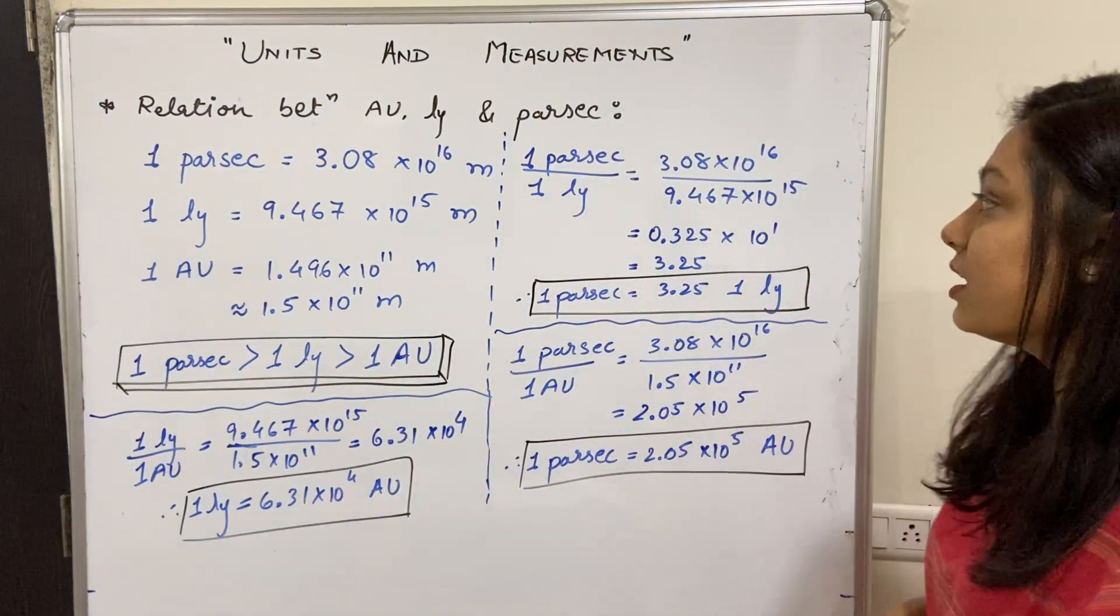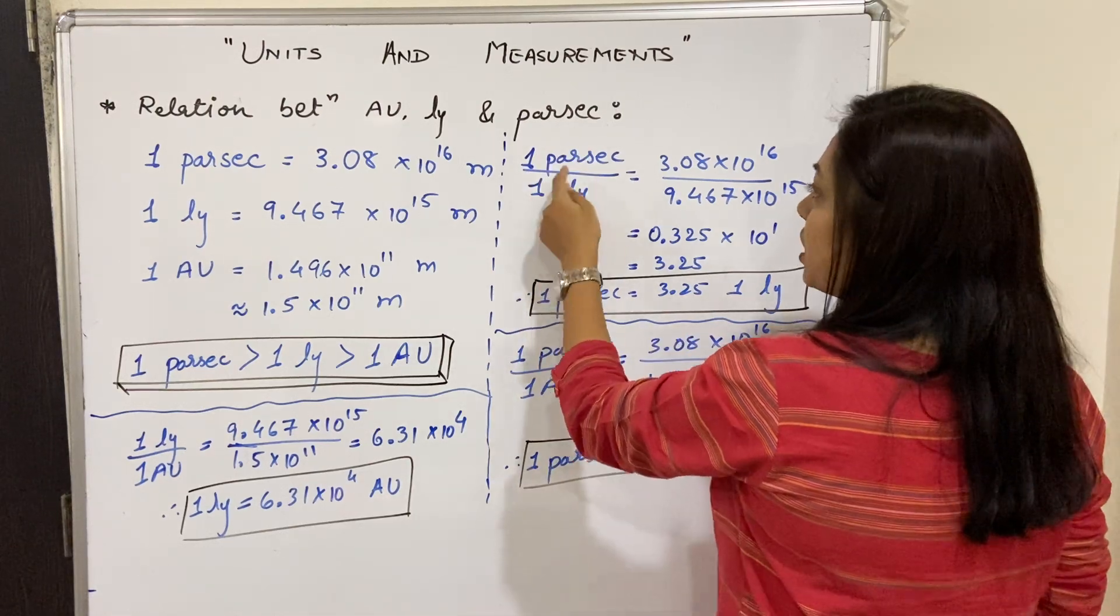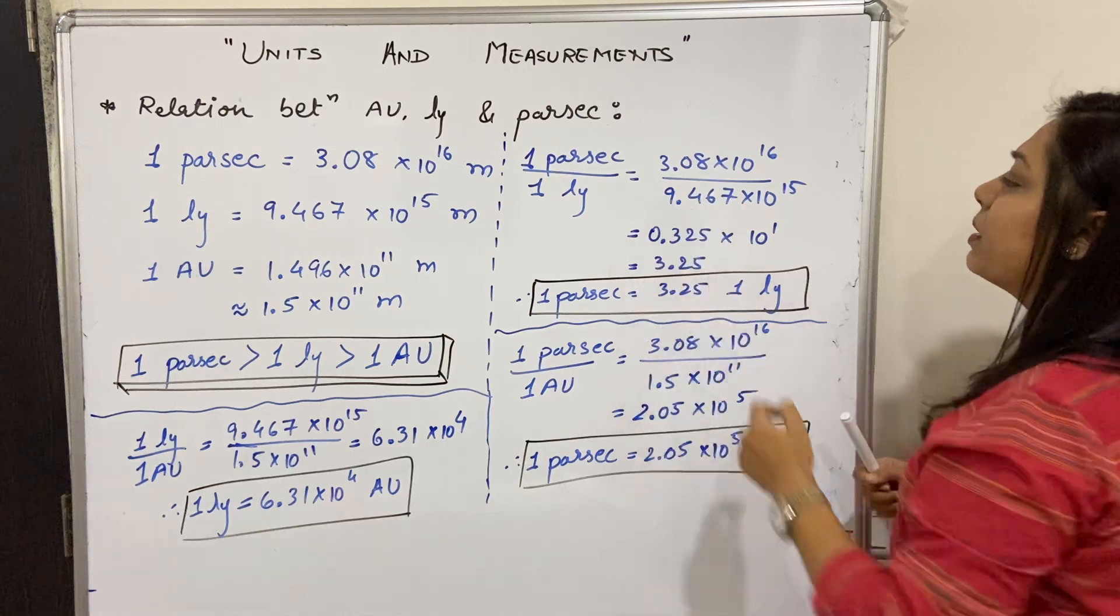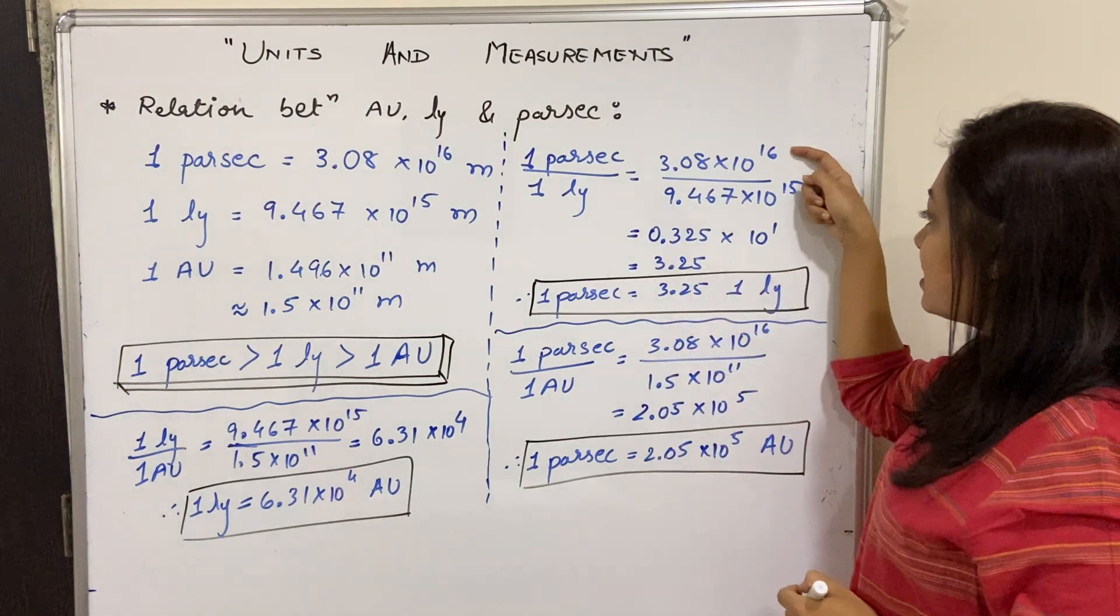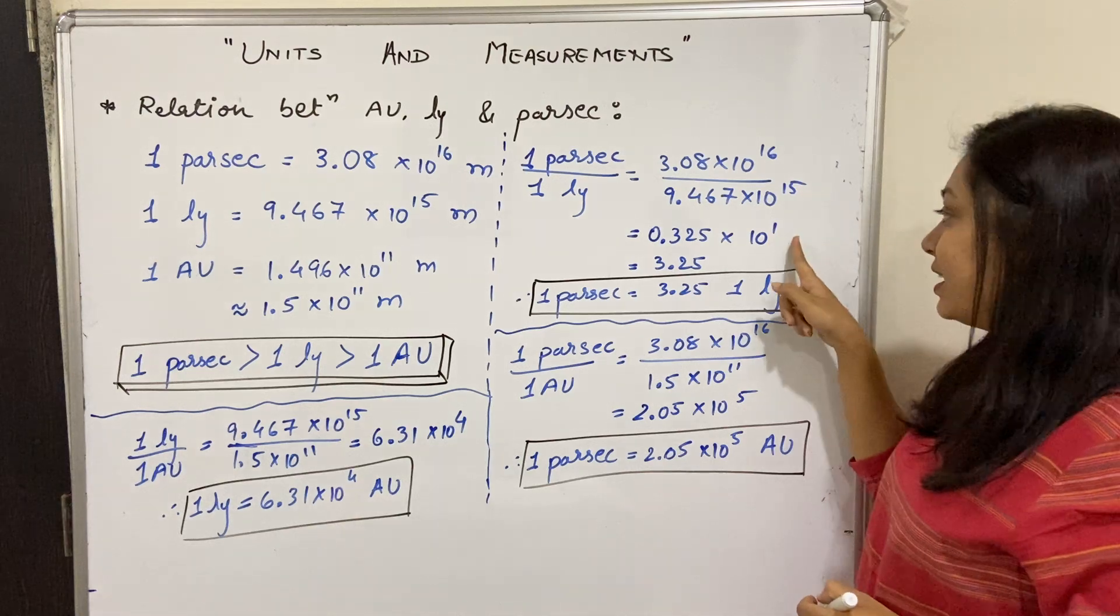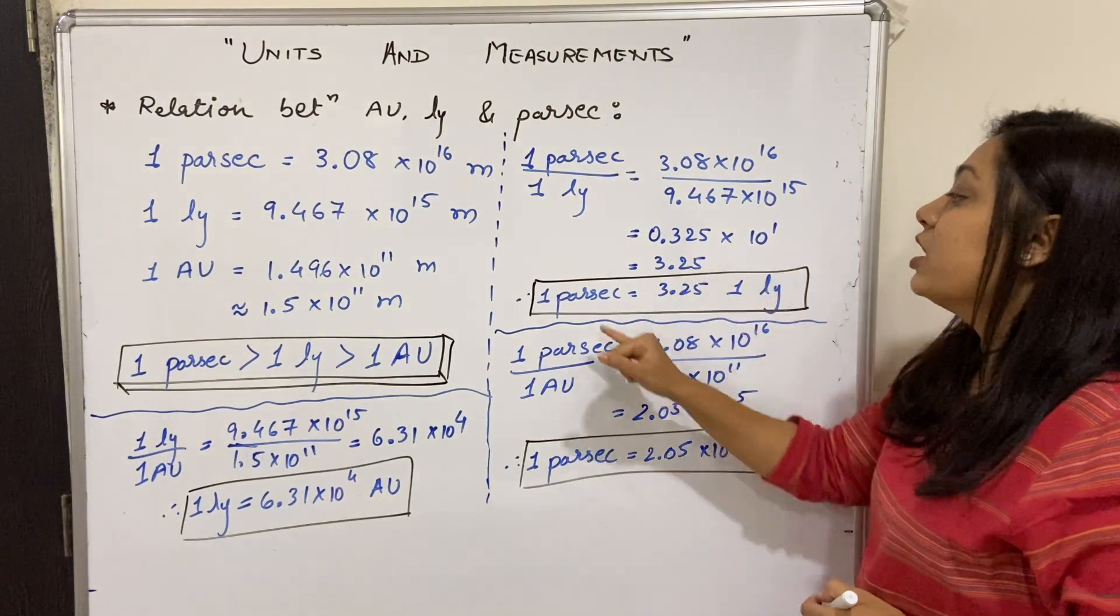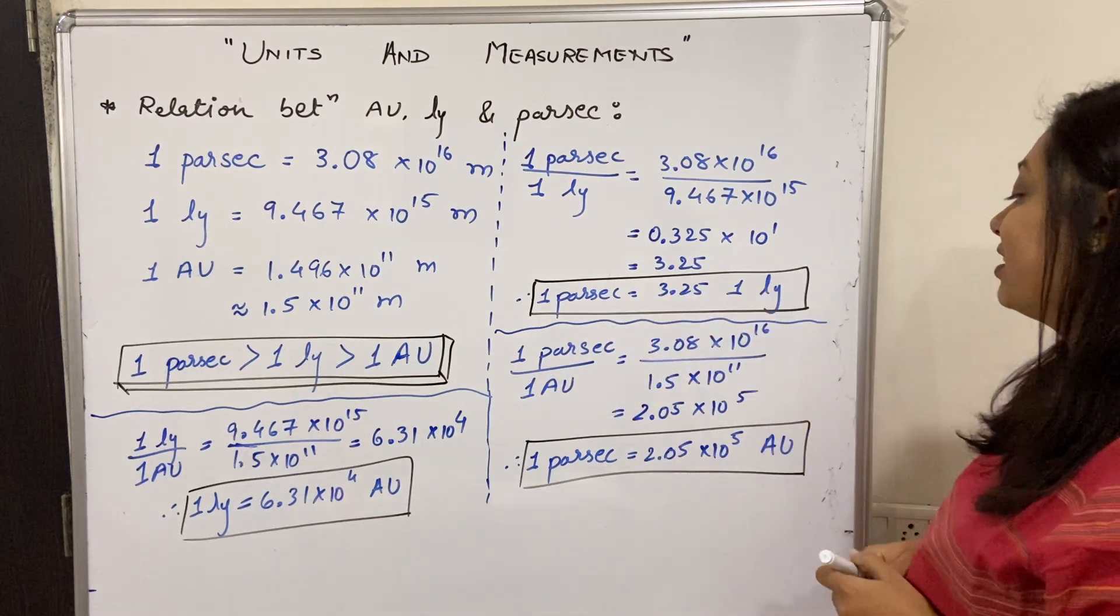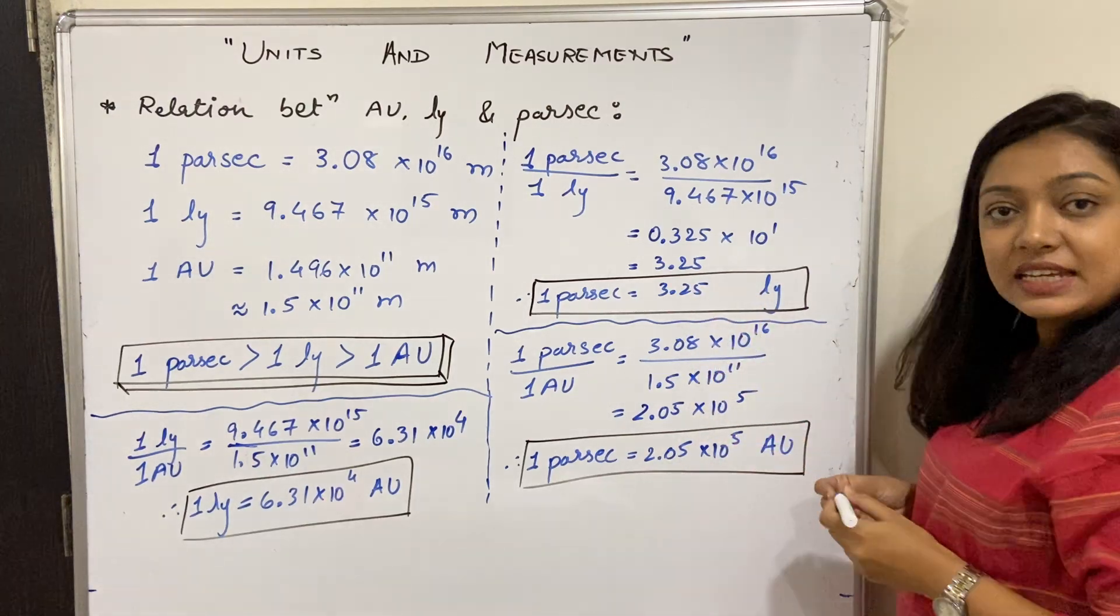So the first comparison is parsec and light year. Let's take the ratio: one parsec upon one light year. When we do this division, we get 3.25 (16 upon 15 power gives us 10, then multiply by 3.08/1.5). So one parsec is 3.25 times one light year. Second comparison is parsec and astronomical unit.